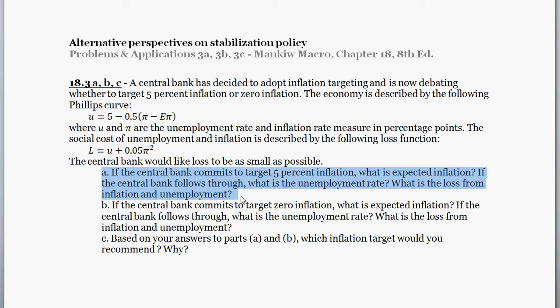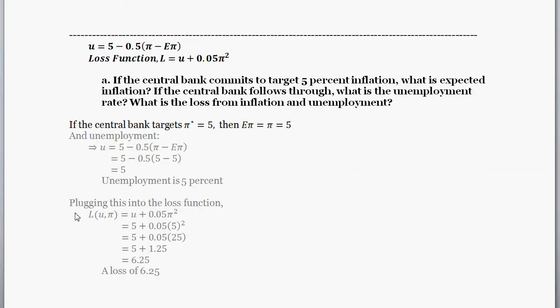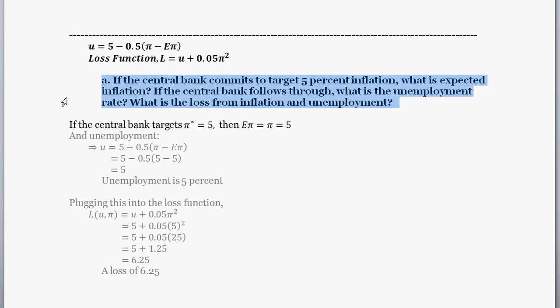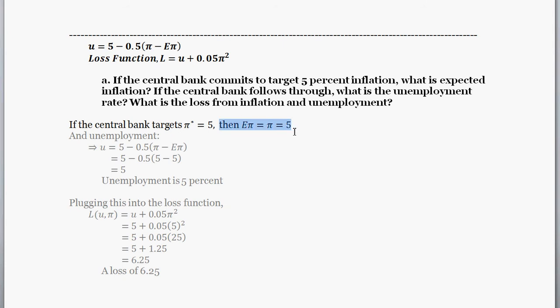Part A asks: if the central bank commits to a target of five percent inflation, what is expected inflation? If the central bank follows through, what is the unemployment rate, and what is the loss? If the central bank targets five percent inflation, then the expected inflation rate is going to be five percent.